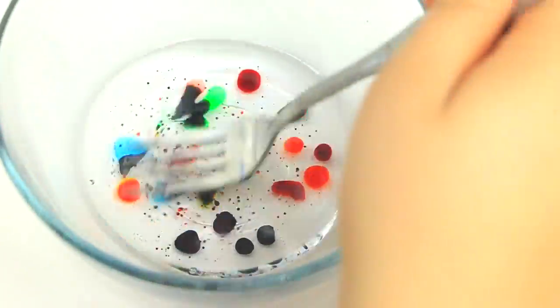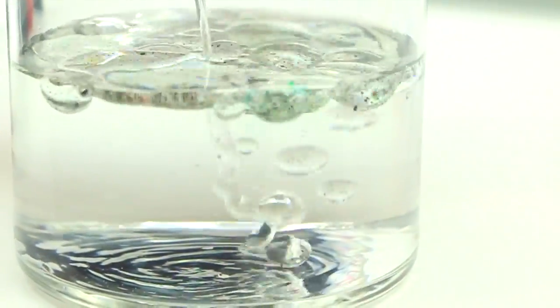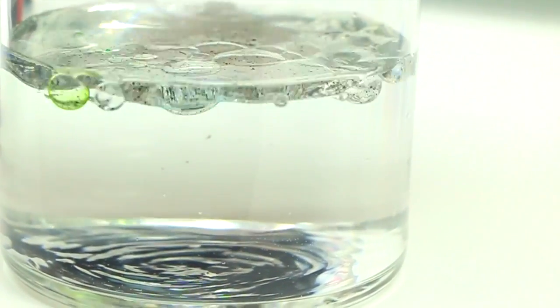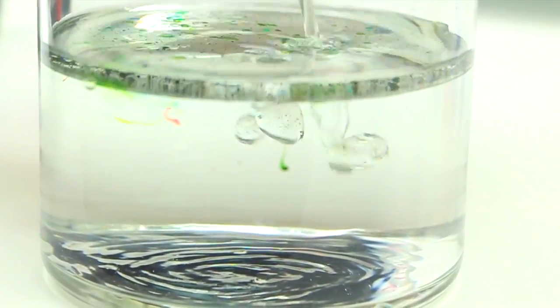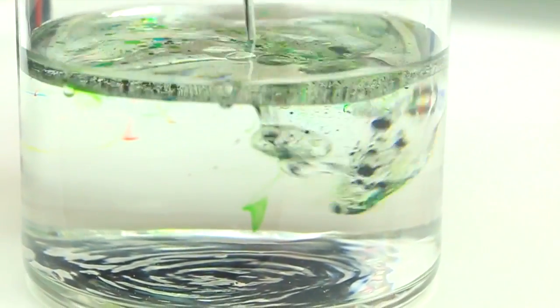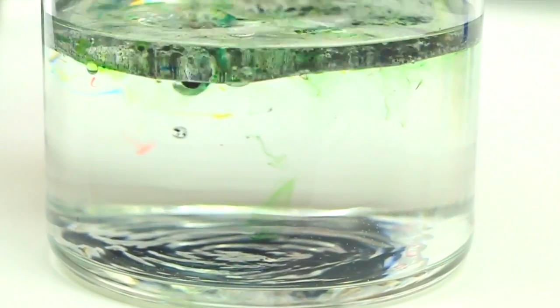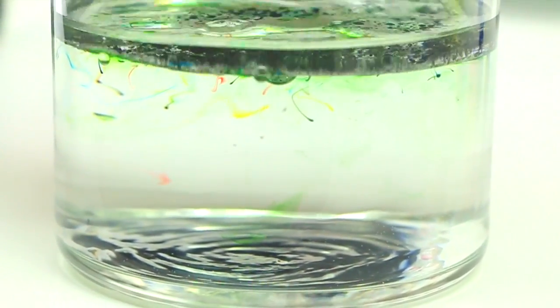Now go ahead and take a fork and whisk everything together. You're going to see a bunch of tiny little droplets begin to form and then we're going to pour that into the water. Then instantly you will start to see the food coloring start to sink to the bottom where the water is at and it just looks really cool. And that, ladies and gentlemen, is the fireworks underwater science experiment.